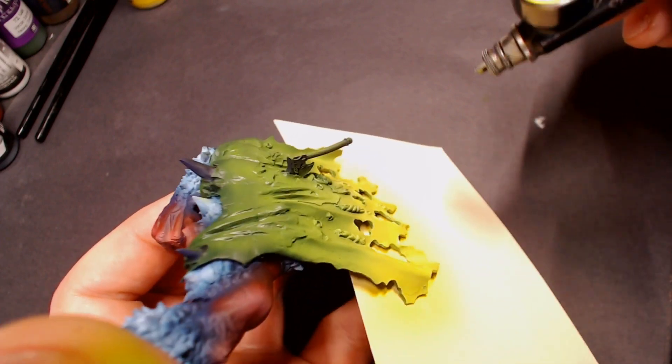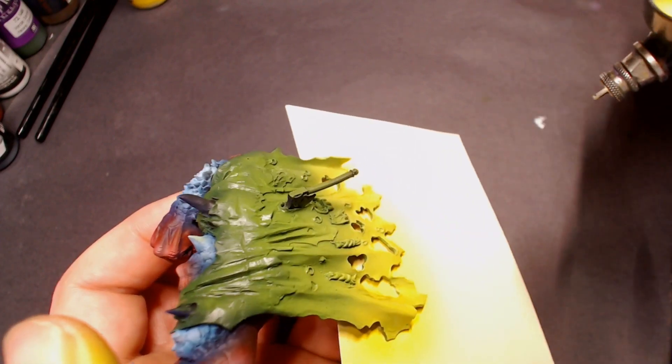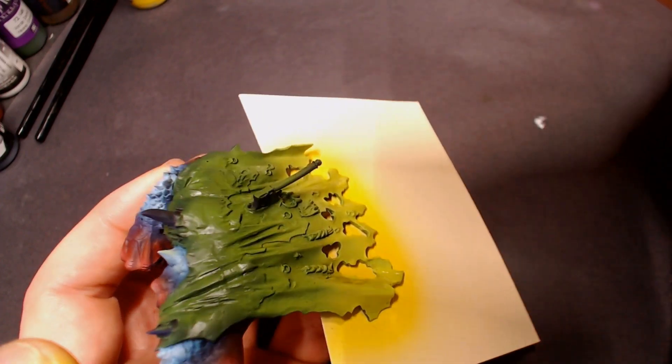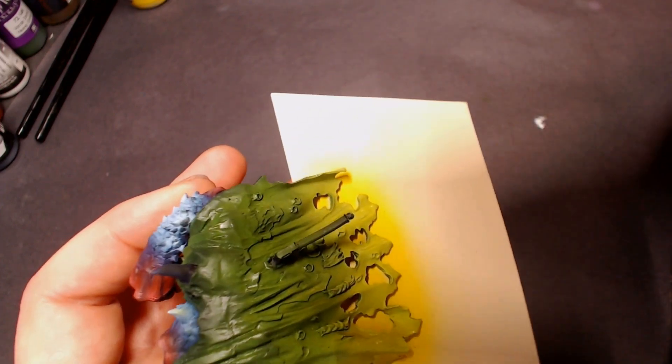If you try to force that paint to build up faster than it wants, you're going to get an excess of moisture and it's going to be really wet on the model. If you keep pushing air over that, it's actually going to push that wet paint around and cause it to spiderweb, and you definitely don't want that.